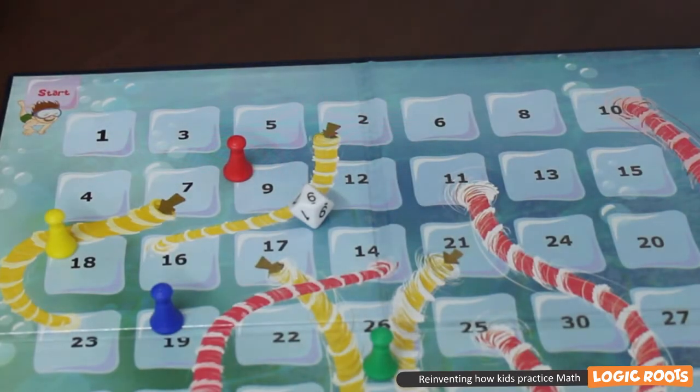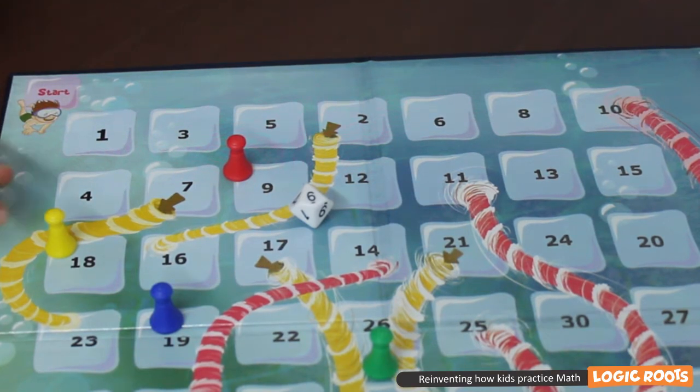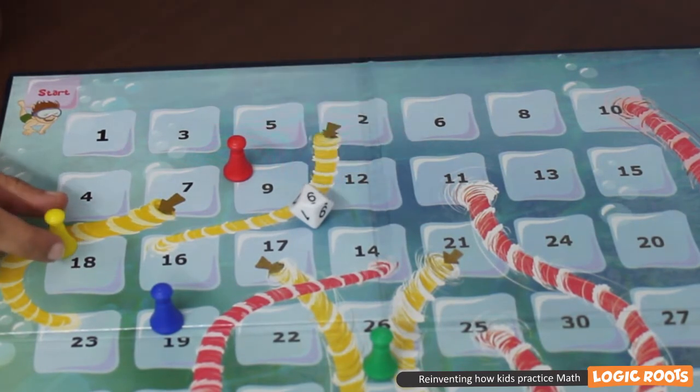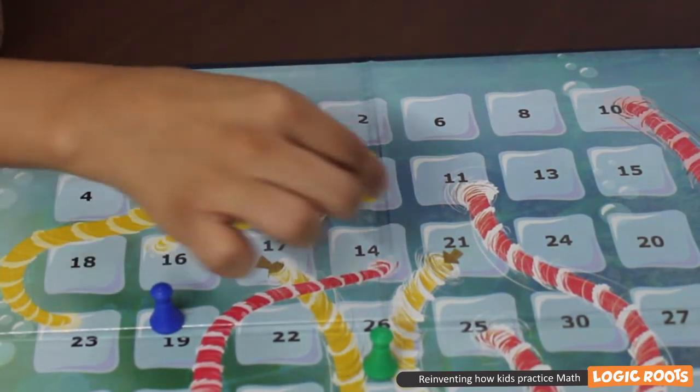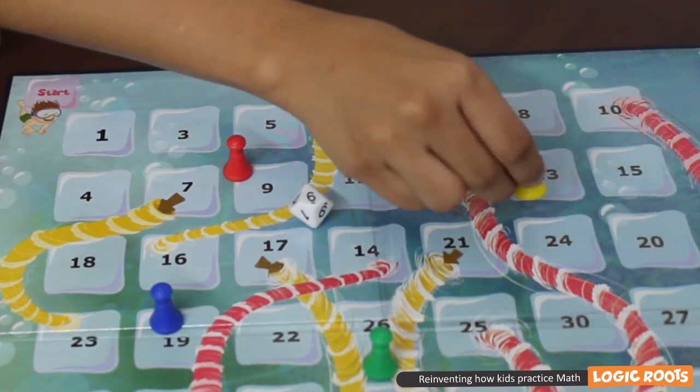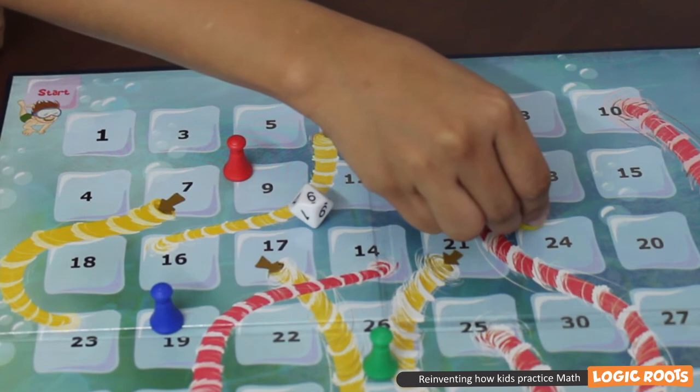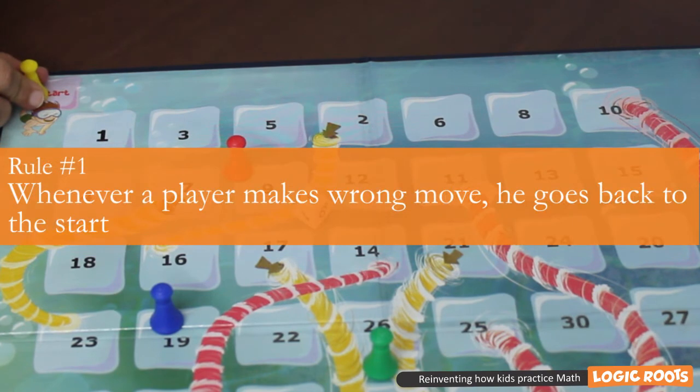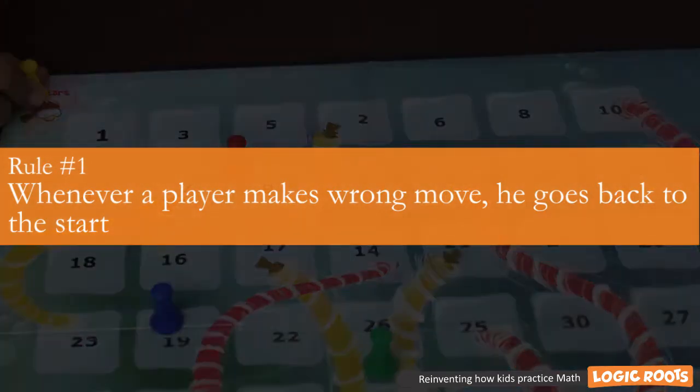Now we all have that one friend who is just too lazy to calculate. So if he makes a wrong move, for example, he was initially on 18 and he got 6 and he goes 1, 2, 3, 4, 5, 6 to 20 instead of 24, then he will go back to the start. So this is the first rule: Whenever a player makes a wrong move, he goes back to the start.